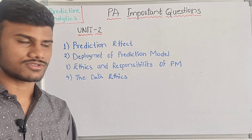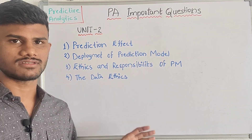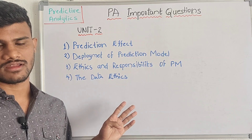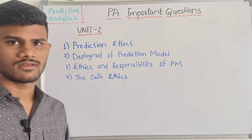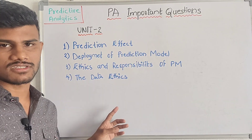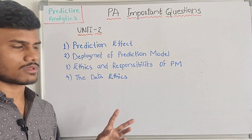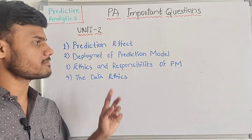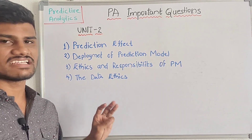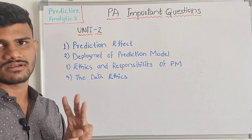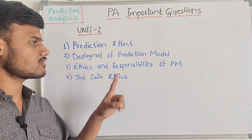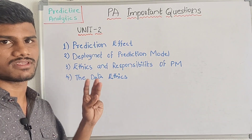Coming to our second unit. This second unit is a very easy unit in this subject. You have four topics to cover in the exam. There are four questions in the paper. If you expect one question, you have one topic choice — so with three topics perfect, you will easily score 10 marks.